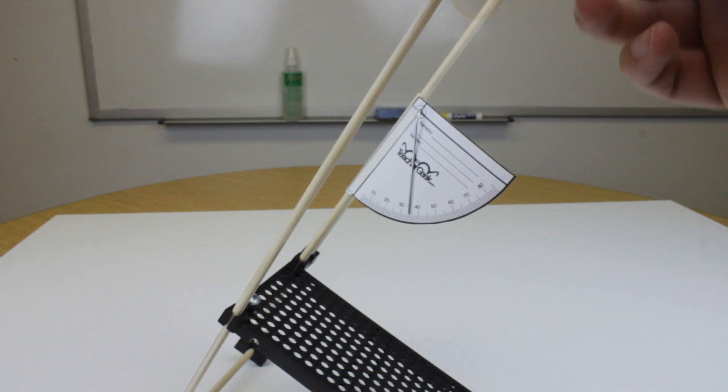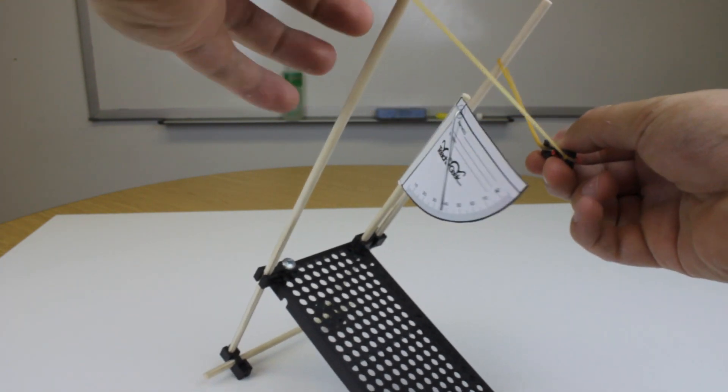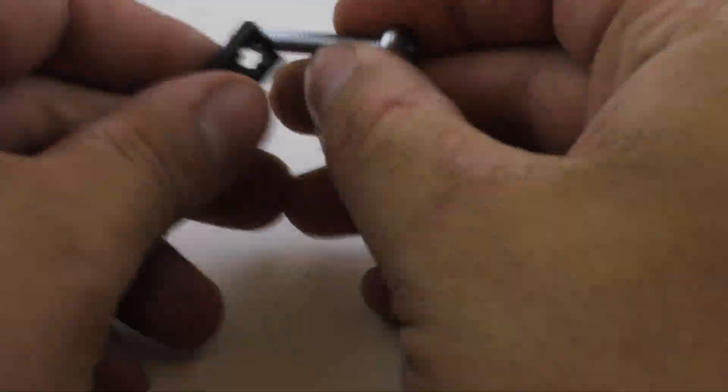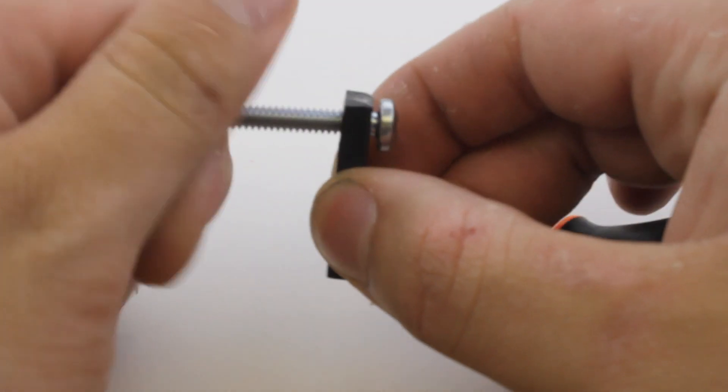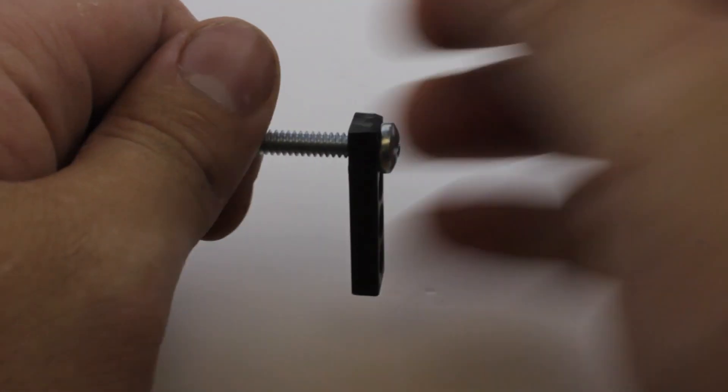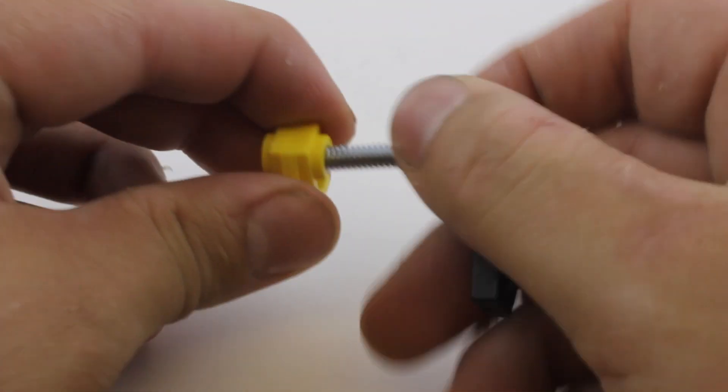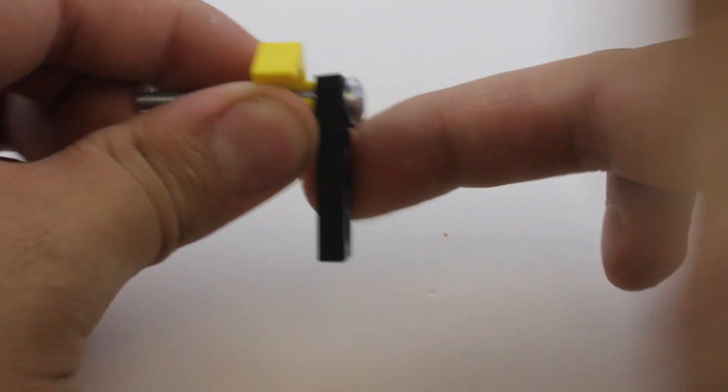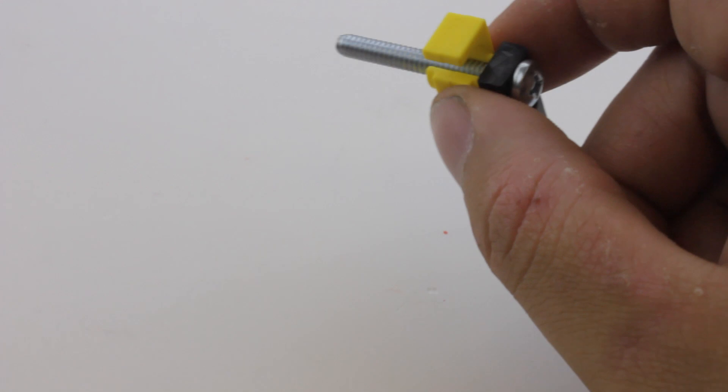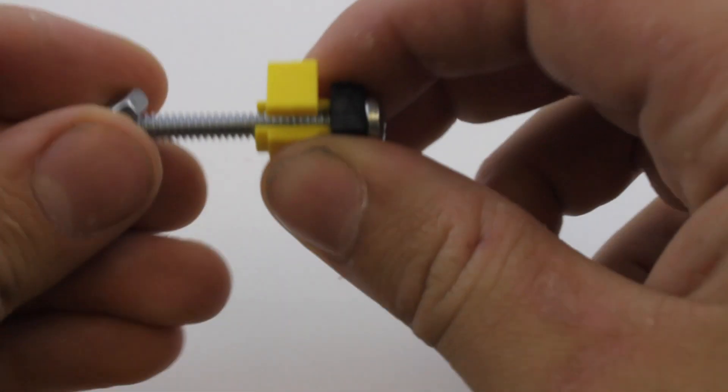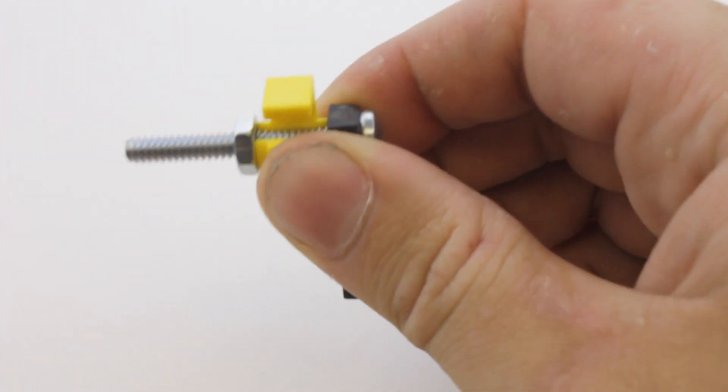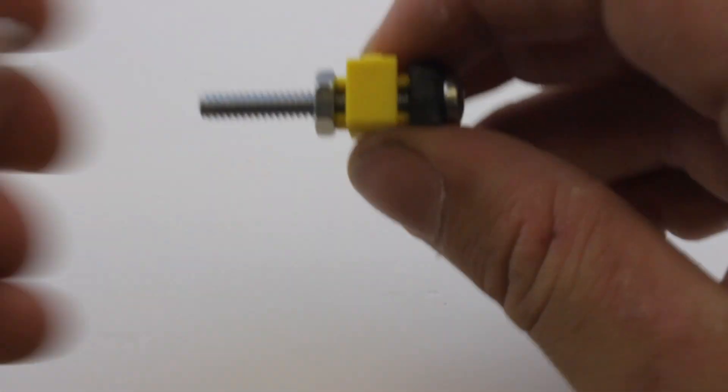Slide the rubber bands over the larger dowels. Now to build the release mechanism. Take the other connector strip you cut and place the screw through and tighten it down. Then place the stop clip on and screw it all the way down until it touches the connector strip. Then add a number 10 hex nut and finally attach a locking nut.